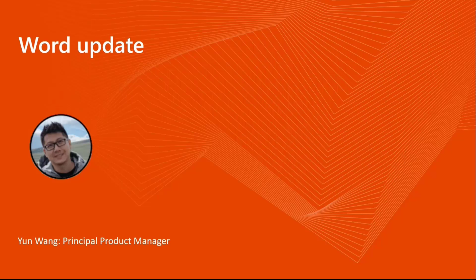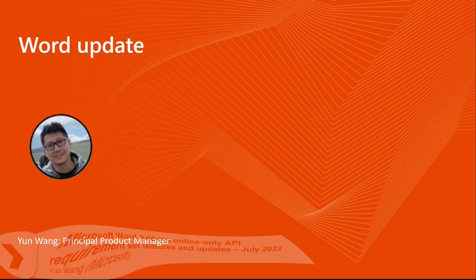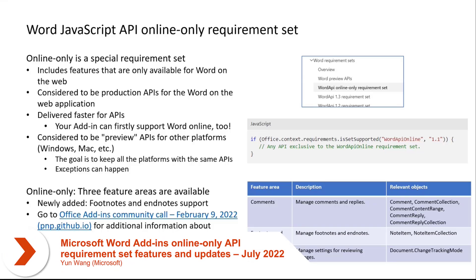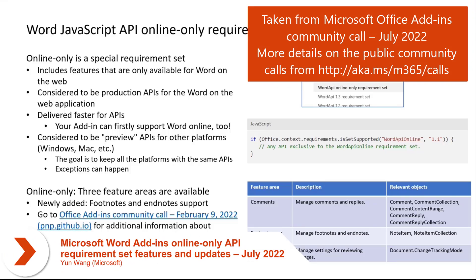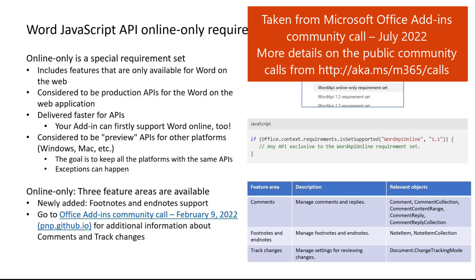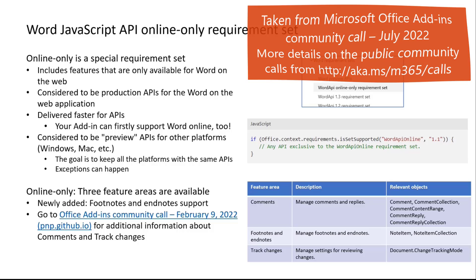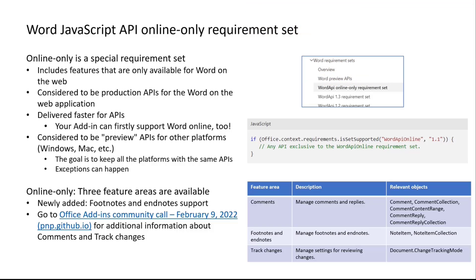Starting with the Word update: we released the online-only requirement set about a month ago, back in May, for Word JS APIs. This set is special because the APIs in it are available only for the web version of Word.